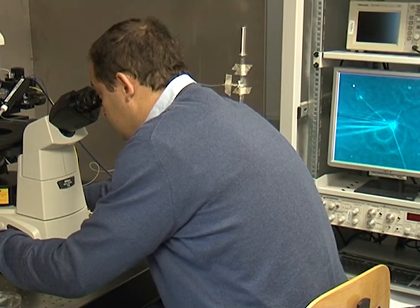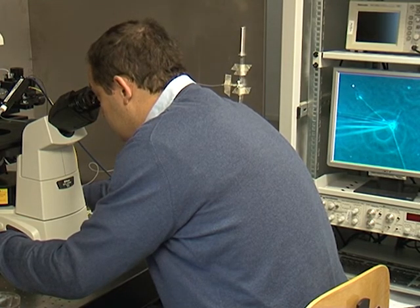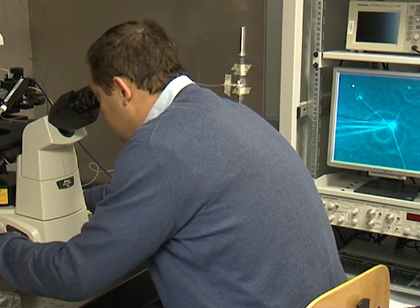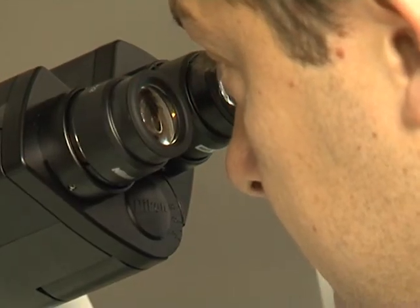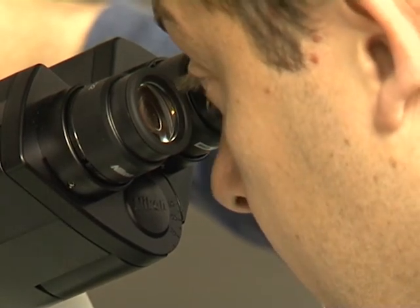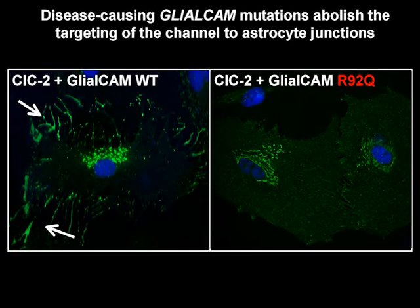We also wanted to see whether GlialCAM was able to modify CLC2 endogenous currents at cell contacts. For this purpose, we infected astrocytes with adenovirus expressing GlialCAM-GFP and measured CLC2 currents through patch clamp. We could confirm that GlialCAM modifies the functional properties of endogenous CLC2 current in astrocytes. All four tested MLC-causing mutations of GlialCAM disturb the CLC2 clustering at cell contacts. Thus, we believe the precise localization of CLC2 is important in glial cells. In primary cultures of rat astrocytes, these mutations led to intracellular staining of CLC2, abolishing targeting to astrocyte junctions.